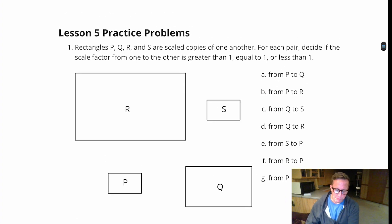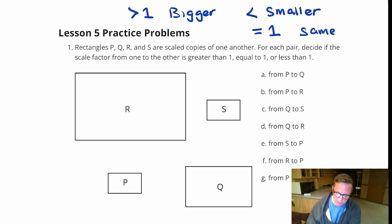So, brief recap here. If it's greater than 1, it means it got bigger. If it's less than 1, it got smaller, it was a reduction. If it's equal to 1, then it's the same shape, same exact size. There was no change to it at all.